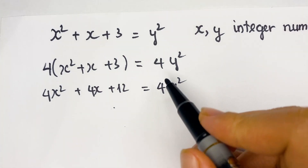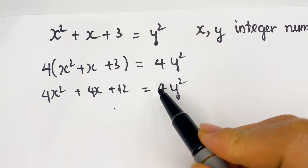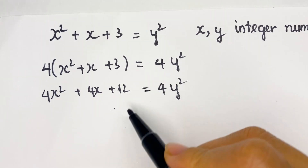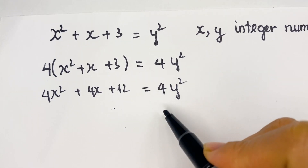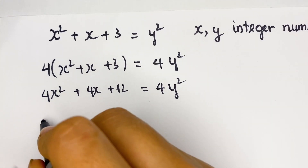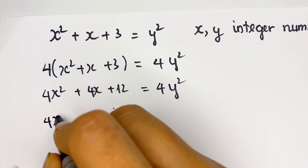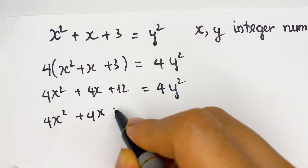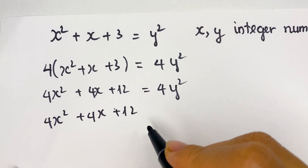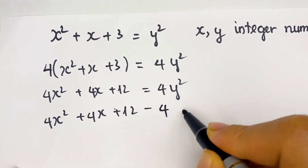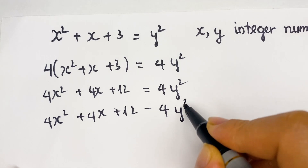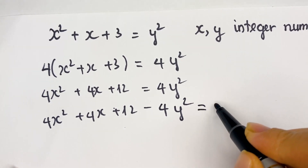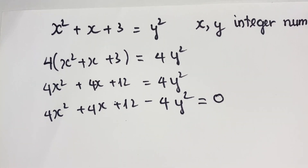And then, how can you proceed next? You need to move 4y squared to the left-hand side. So therefore, we have 4x squared plus 4x plus 12 minus 4y squared equals 0.